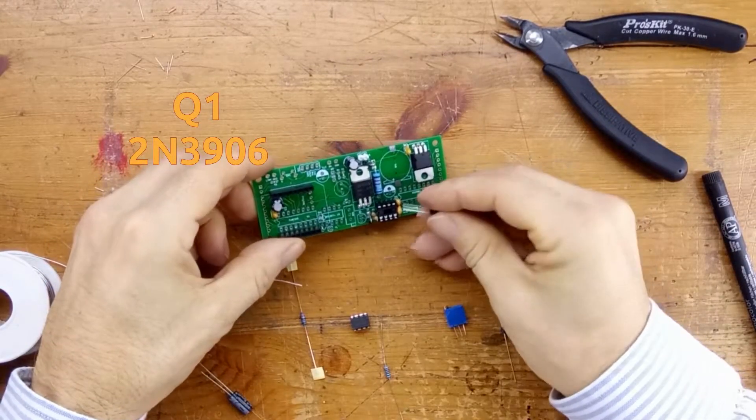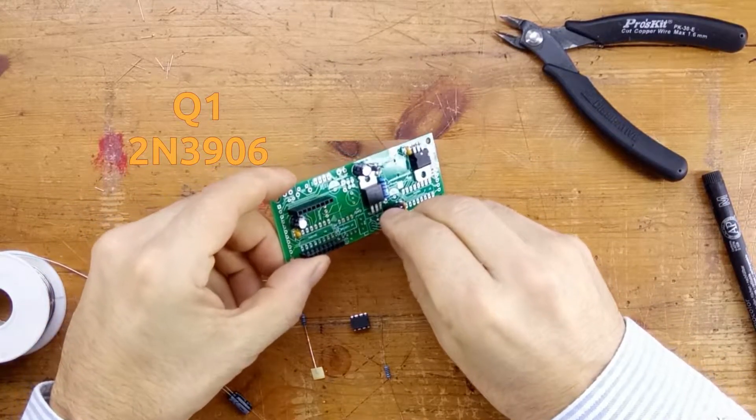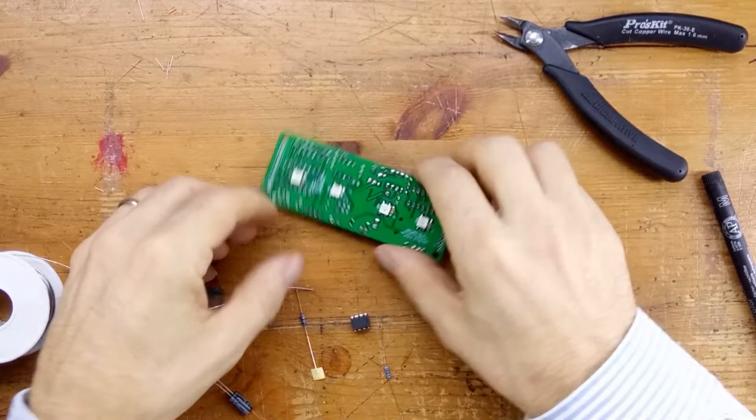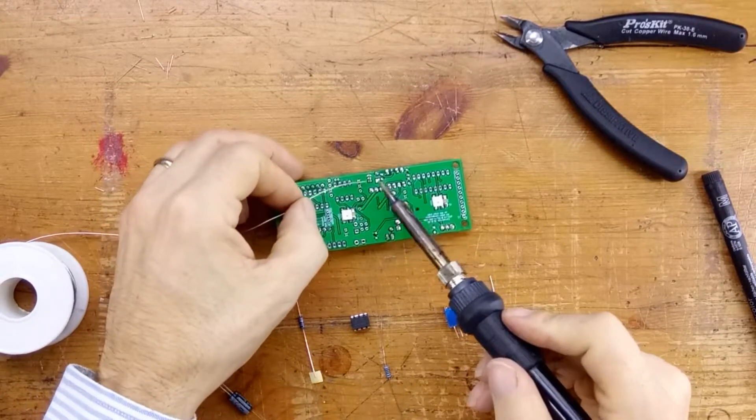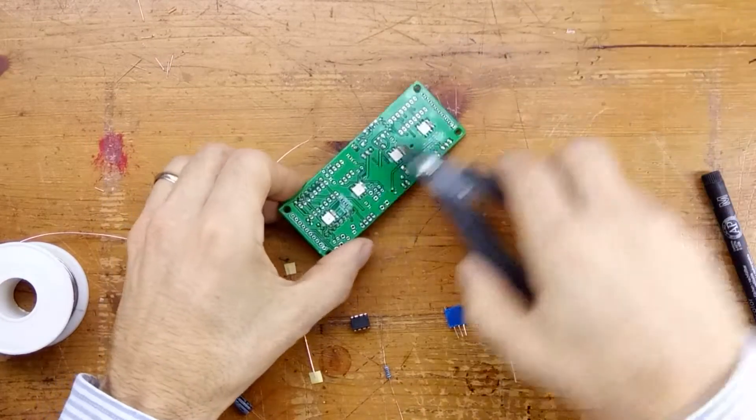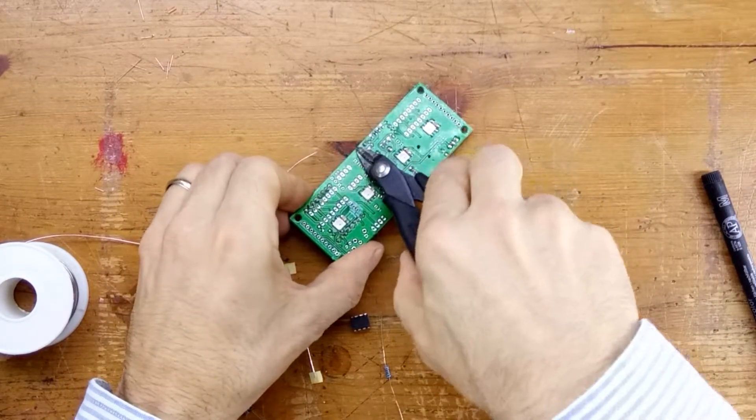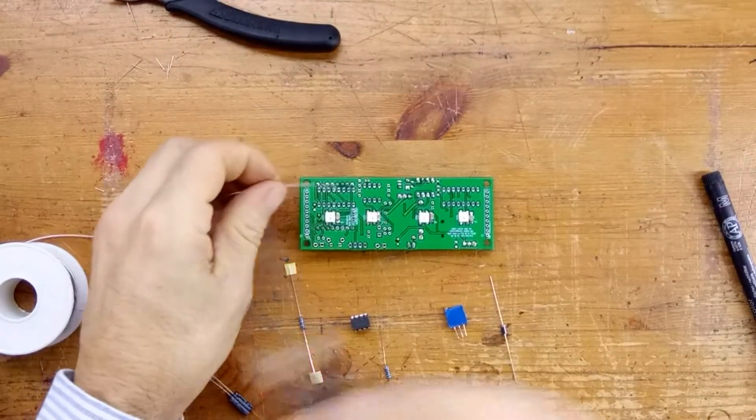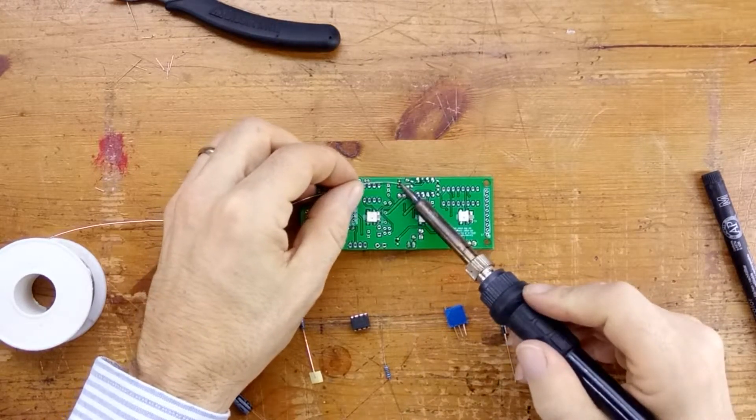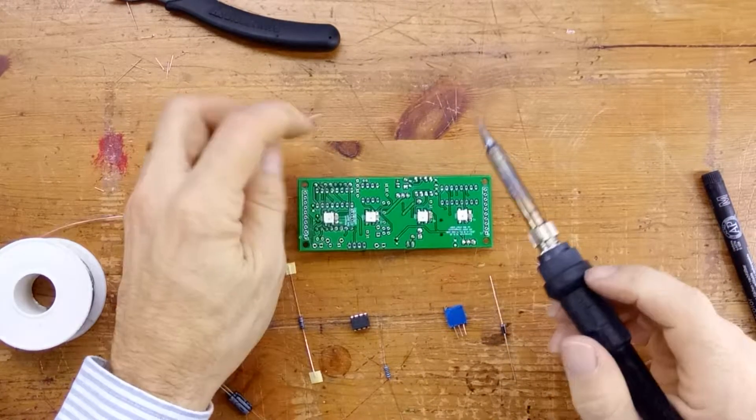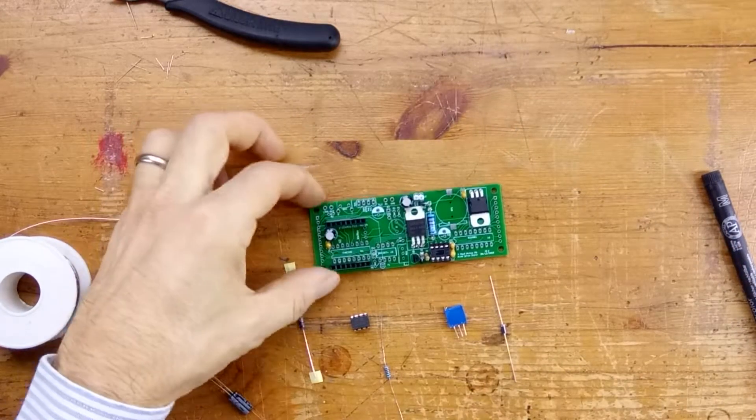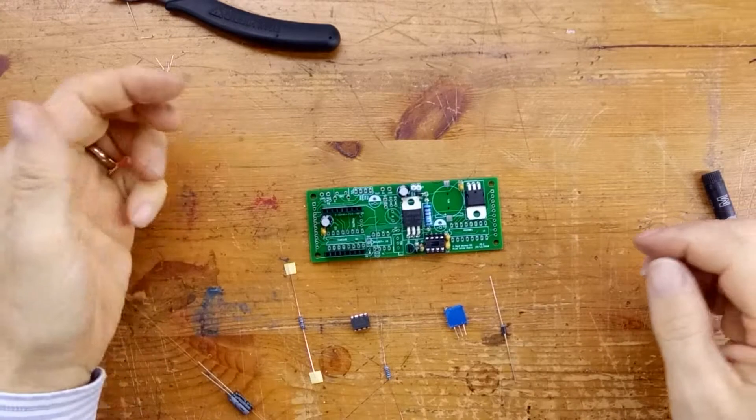Next we're going to put in the 2N3906, which is Q1. The shape of the transistor's body has a flat side on it. Make sure that the flat side matches up with the flat side marked on the silk screen. Now, I find it easier to do this: I solder one pad, then trim all three leads off in one go, and solder the other two pads at the same time.